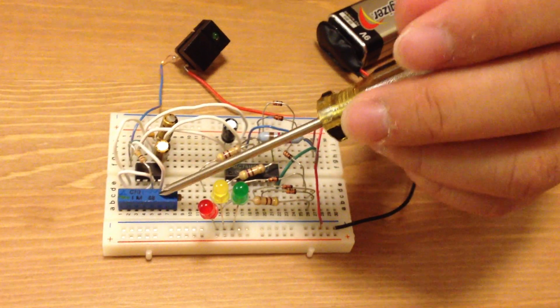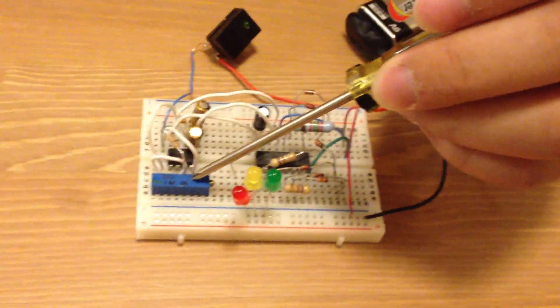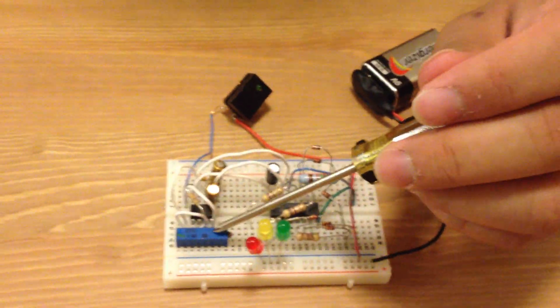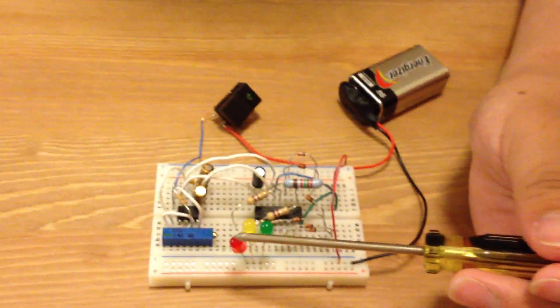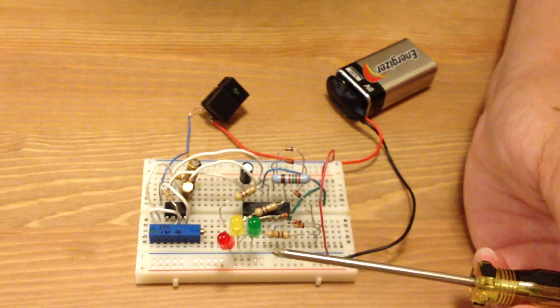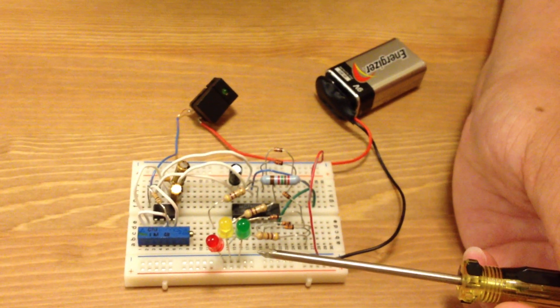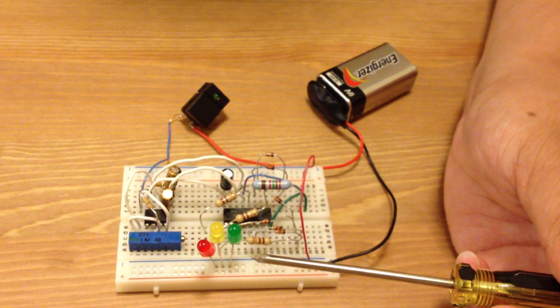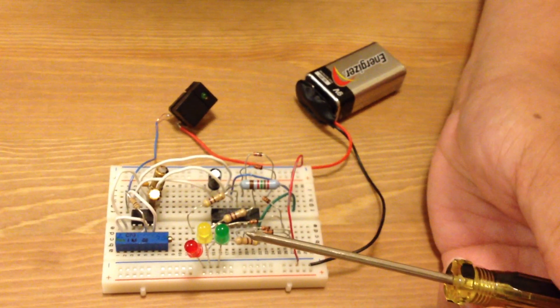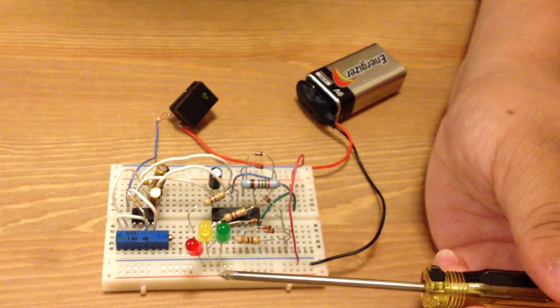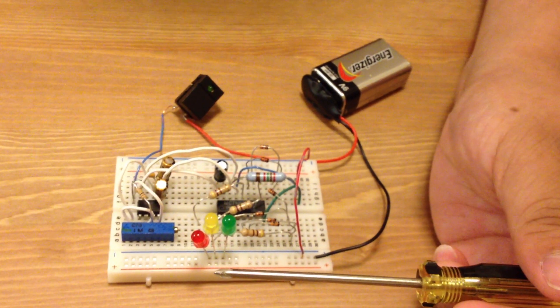And then we have here a potentiometer, which is one mega ohm by itself. And depending on the value I adjust it to, it will control the length of the traffic light. So pretty much the smaller the potentiometer, the shorter the cycle length of the traffic light will be.